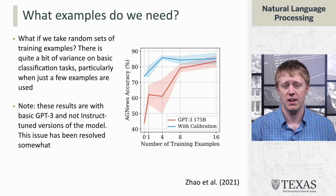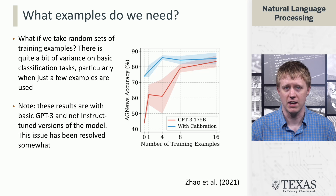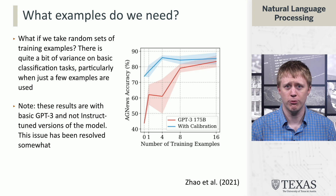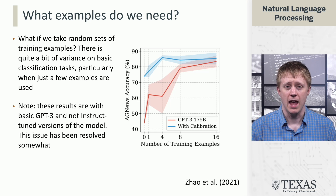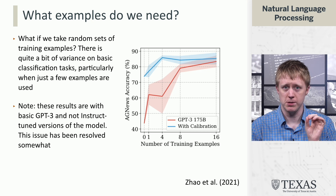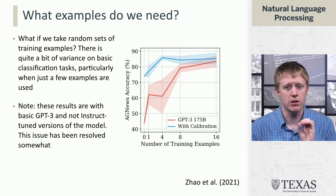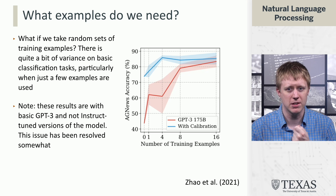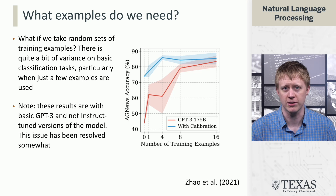In particular, if we take random sets of training examples, we can look at the variance in classification performance. In this graph, we see that at four examples, the model can vary between 50% and 70% accuracy using raw GPT-3 trying to get classification decisions. With instruction-tuned models this variance reduces dramatically, but it still shows that the examples you give are pretty important and do govern task performance a lot.